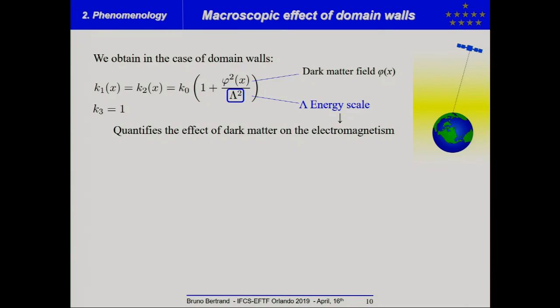And so, we make the calculation and we obtain, in the case of domain wall, that the constant K1 and K2 are equal, the function K1 and K2 are equal, and are directly related to the dark matter field. And so, to another parameter, which is, in particle physics, is called energy scale. And this parameter, lambda, quantifies the effect of dark matter on the electromagnetism.